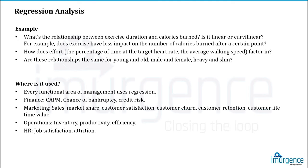How do factors like percentage of time at the target heart rate and average walking speed factor in? Are these relationships the same for young and old, male and female, heavy and slim? Linear regression is used to predict expected loss in an insurance company, profits from a product combination, or marks scored by a student based on behavior. Linear regression is specifically used for value prediction and not for decision making.